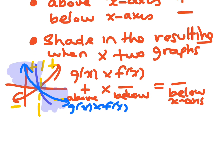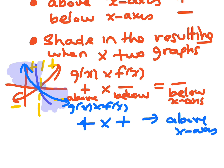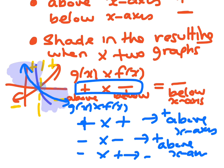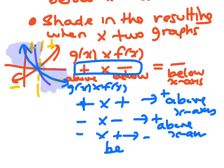You're just working out whether it's positive or negative — above or below. A positive times a positive ends up above the x-axis. A negative times a negative also equals a positive, so that one is above the x-axis too. If you get two opposite signs — a negative times a positive — that's a negative, so it will be below the x-axis.